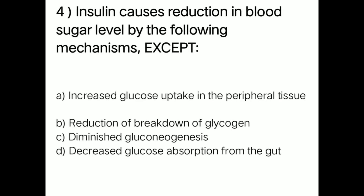Next question: insulin causes reduction in blood sugar level by the following mechanisms except — option D: decreased glucose absorption from the gut. The right answer is option D. Insulin does not work by decreasing glucose absorption from the gut.